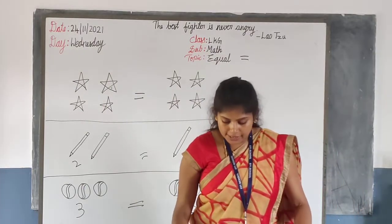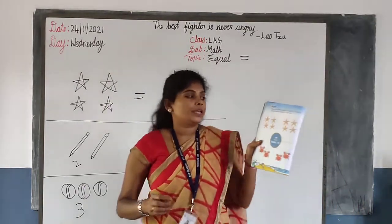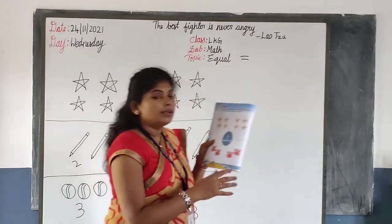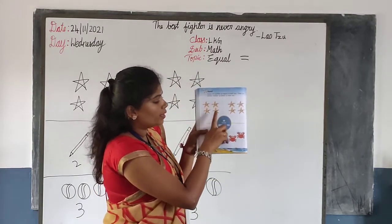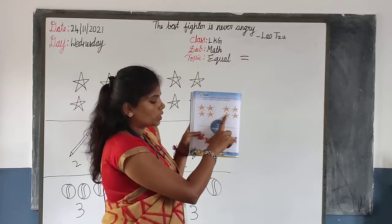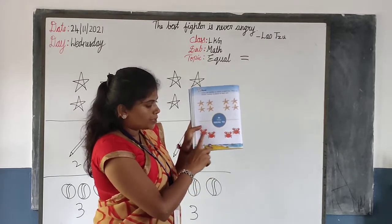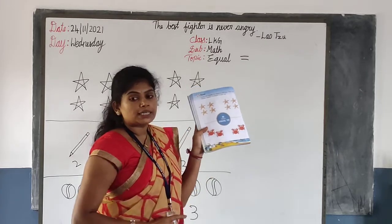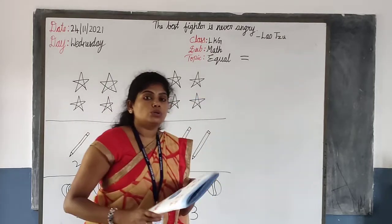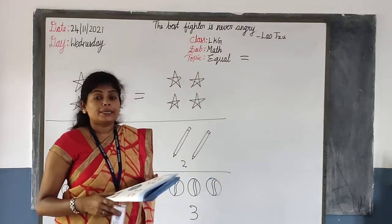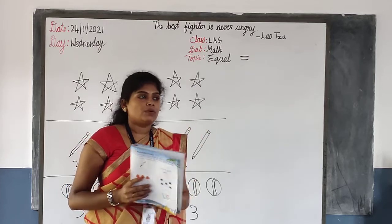Now please open your math book to page 15. Look at the stars: 1, 2, 3, 4 on one side and 1, 2, 3, 4 on the other side. And below: graphs — 1, 2 on each side. Both the number of objects are equal.